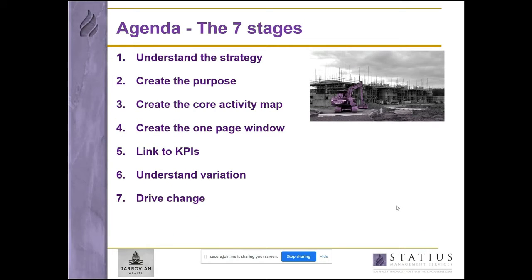In terms of a logical process, the seven stages of optimizing how your construction work works — and therefore driving cash to the bottom line — are in order: understand the strategy, essentially where the business is going and how it's going to get there; and create the purpose, which is about the benefits and capabilities you deliver to your clients.